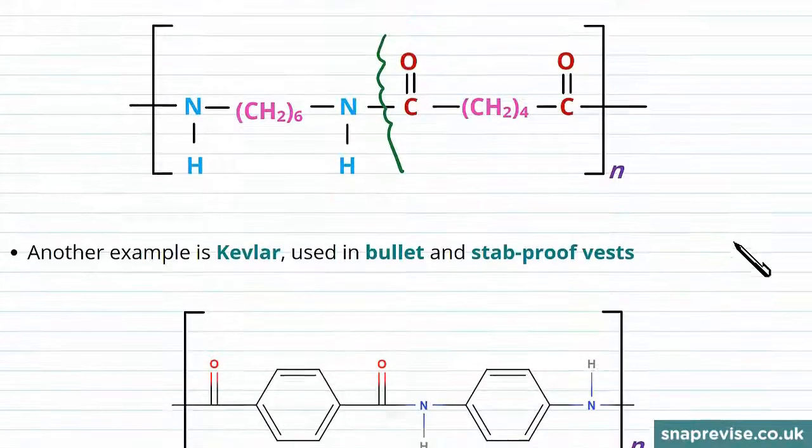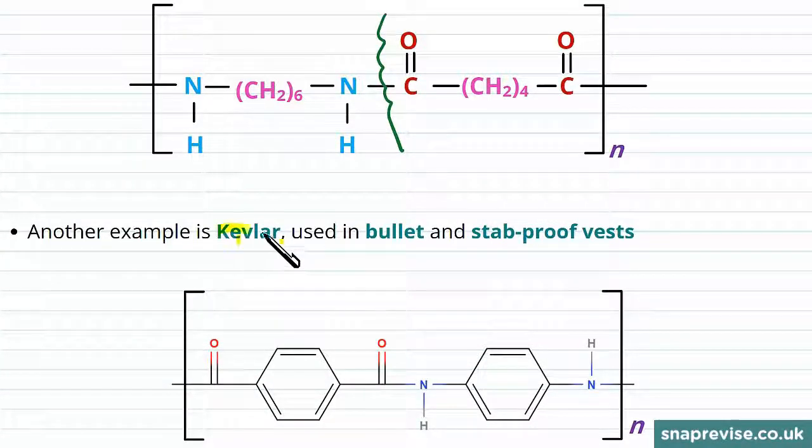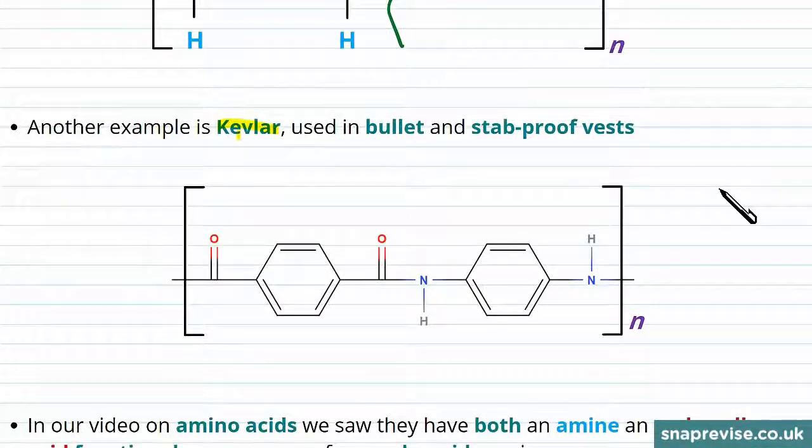Another example is Kevlar, which you may have heard of being used in bulletproof and stab-proof vests. This has aromatic rings within the monomers, but again we can see that where the double bond to an oxygen meets a nitrogen...